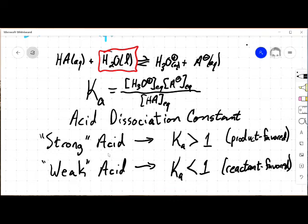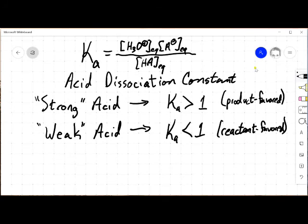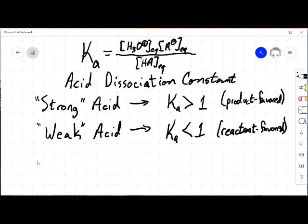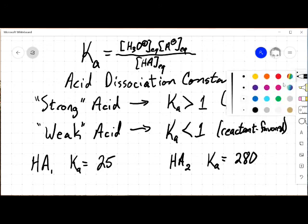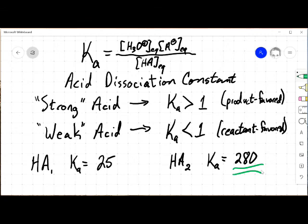If I have a strong acid with, let me move this up a little bit, if I have HA1 with a Ka of 25 and I have HA2 with a Ka of 280, well, these are both strong acids, but this one is definitely the stronger of the two.